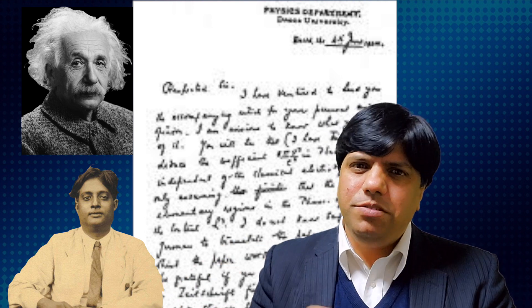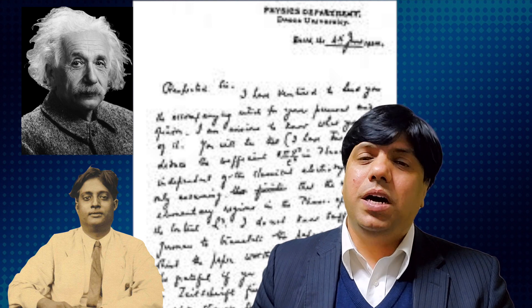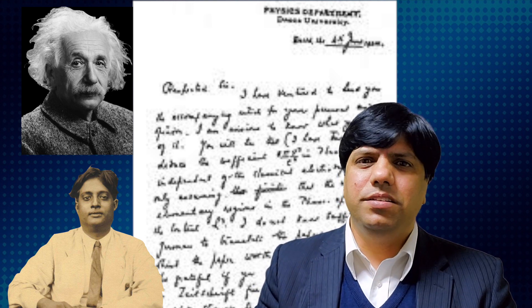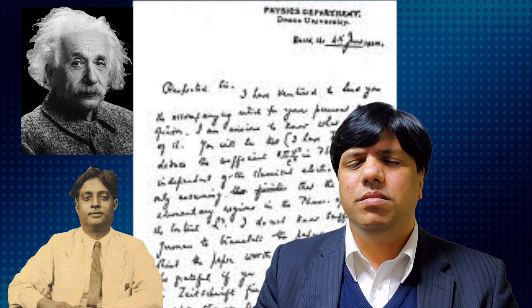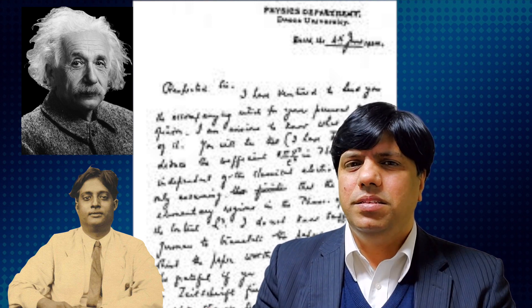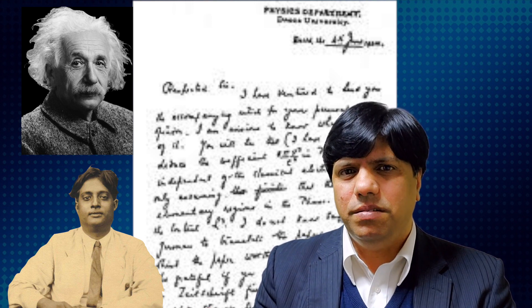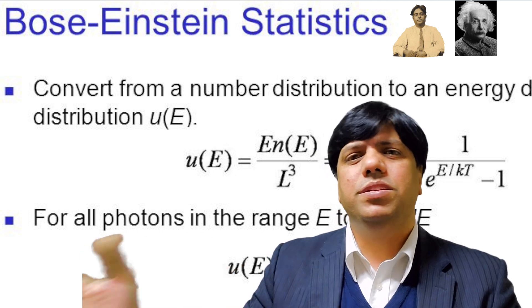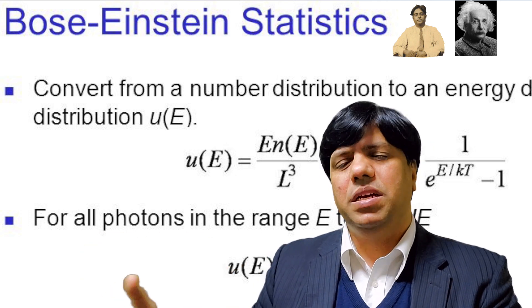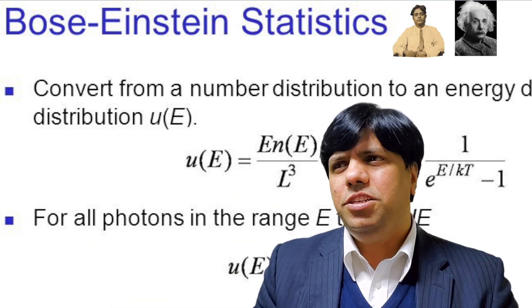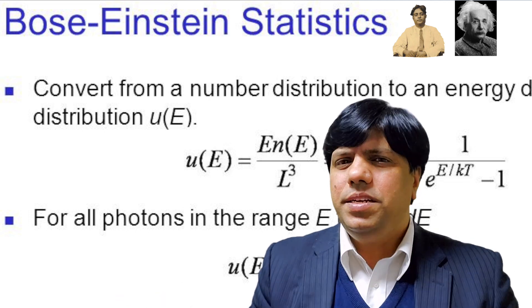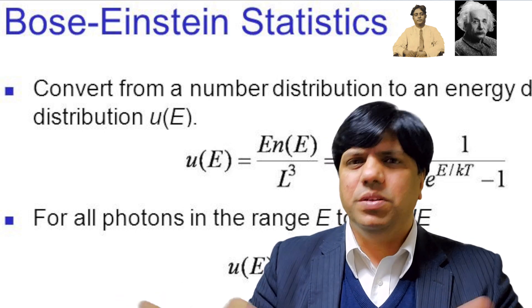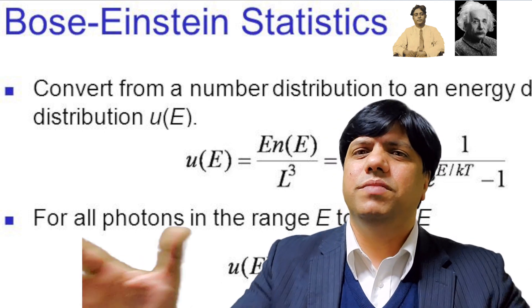So he writes to Einstein. Einstein understood it and said, this is brilliant. He wrote back to S.N. Bose saying, this is amazing work, thank you. Einstein translated this statistical work into German and published it in a German magazine in the name of Bose. In 1924, S.N. Bose was 30 years old, and overnight, S.N. Bose became famous in the physics fraternity.